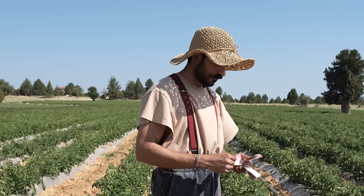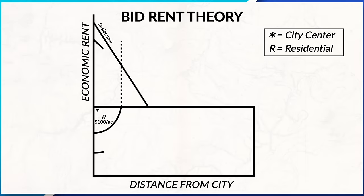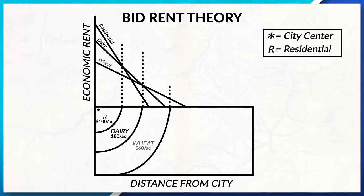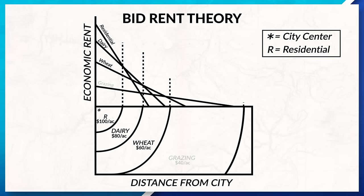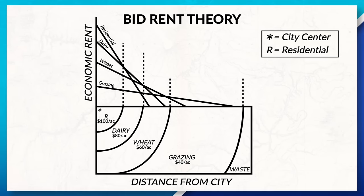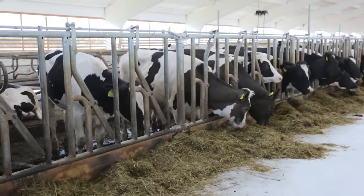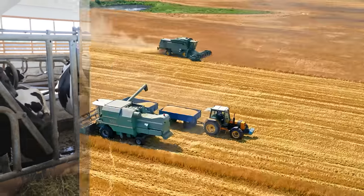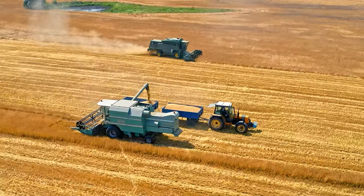Von Thunen's model is all about maximizing profit. Remember the bid-rent theory? It is one of the driving forces behind this model. The bid-rent theory states that land costs more the closer you get to an urban area — or in this case, a market. The farther away you are from the market, the cheaper land is, which means we are more likely to see intensive commercial agriculture near the city and more extensive commercial agriculture away from the city.